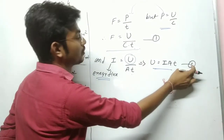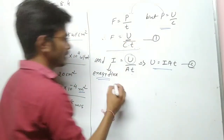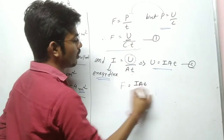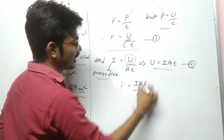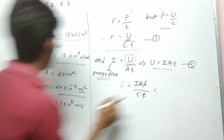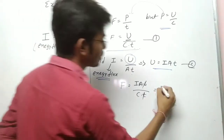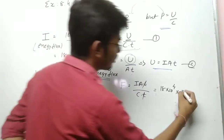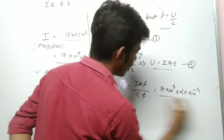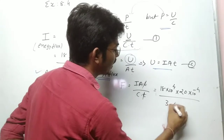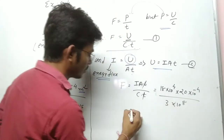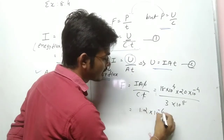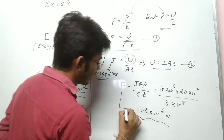Substituting Equation 2 into Equation 1: F = (I × A × T) / (C × T). The T cancels out, giving F = I × A / C. Now putting in the values: I = 18 × 10⁴, A = 20 × 10⁻⁴, C = 3 × 10⁸. Our answer comes out to 1.2 × 10⁻⁶ Newton. That is our value of F.